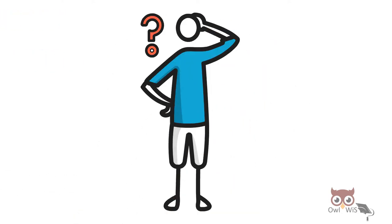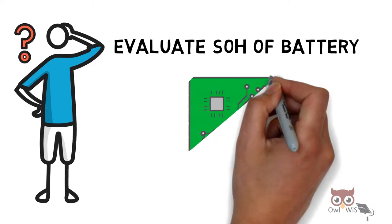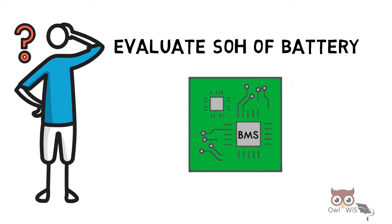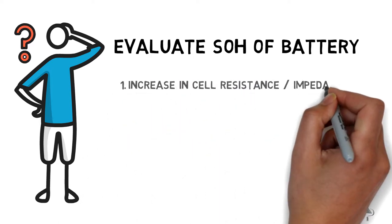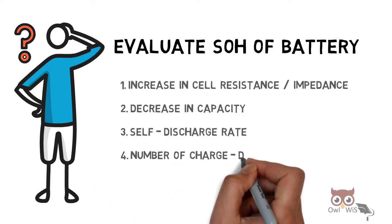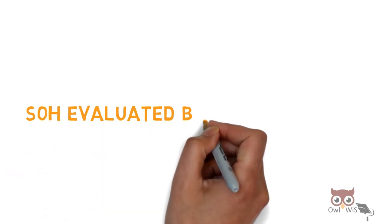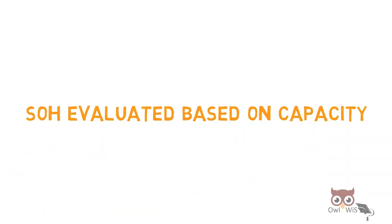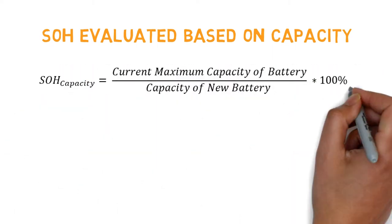The BMS uses a combination of parameters to evaluate SOH, such as increase in cell resistance or impedance, decrease in capacity, self-discharge rate, number of charge-discharge cycles, and age of the battery.